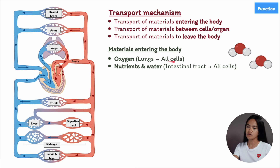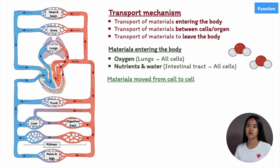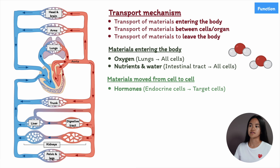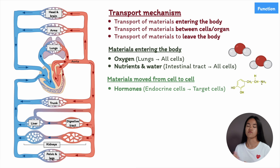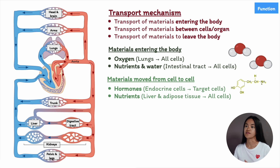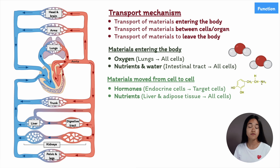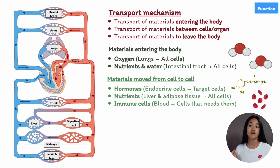Next, substances that move from cell to cell within the body. Hormones are substances that act at a distance and require the circulatory system to transport them from the site of synthesis to the site where they exert their effects — cell-to-cell communication is a very important function. We also store nutrients between meals, and the blood transfers those nutrients to metabolically active cells, such as glucose from the liver and fatty acids from adipose tissue.